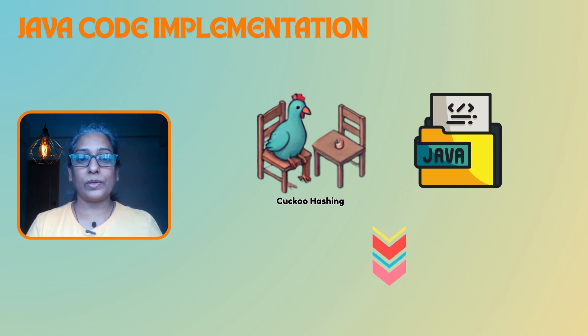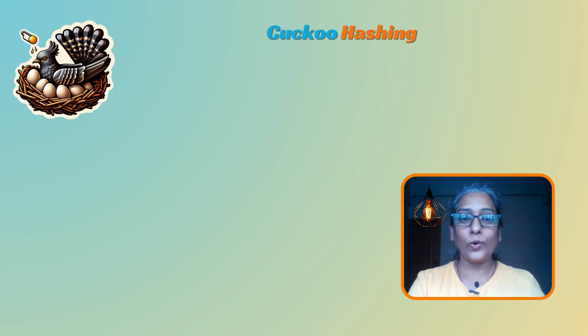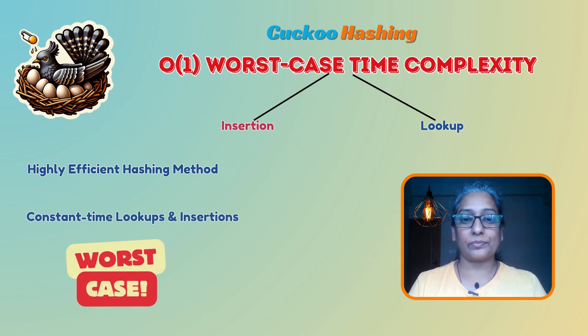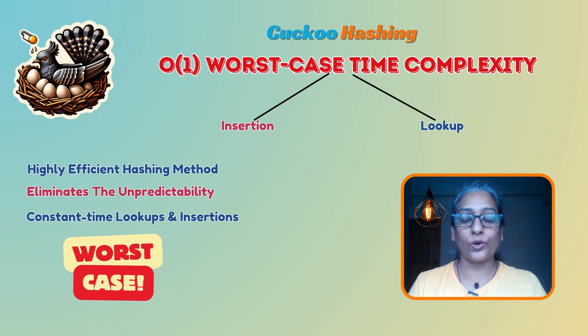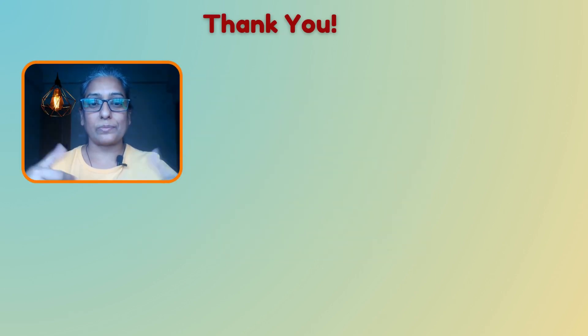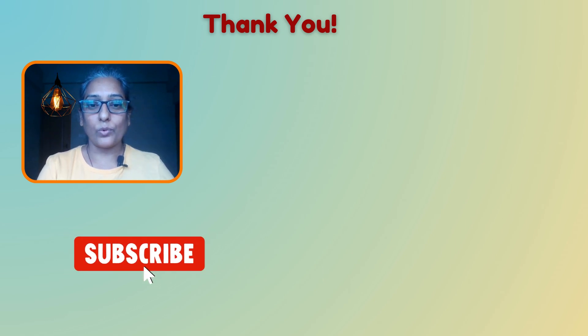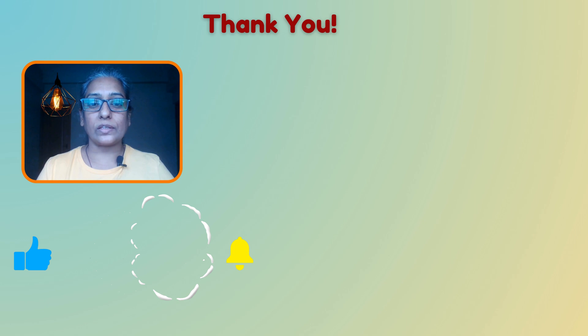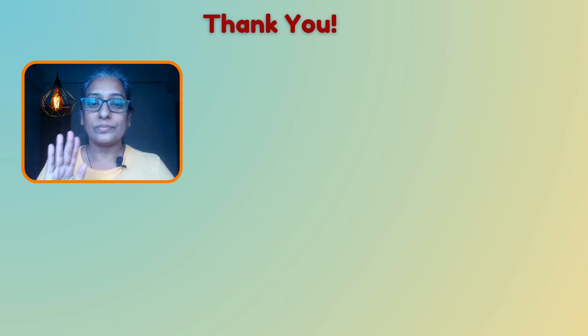You can find a link to a simple Java implementation of cuckoo hashing in the description. Cuckoo hashing is an efficient method that ensures constant time lookups and insertions even in the worst case, avoiding the unpredictability of traditional hash tables. With its O(1) worst-case time complexity, cuckoo hashing is a great choice for high-performance applications. If you found this video helpful, give us a thumbs up and subscribe. Check out our other videos on software performance optimization, system design, big data, and career growth. My name is Rupa — thank you so much for watching, see you next time!